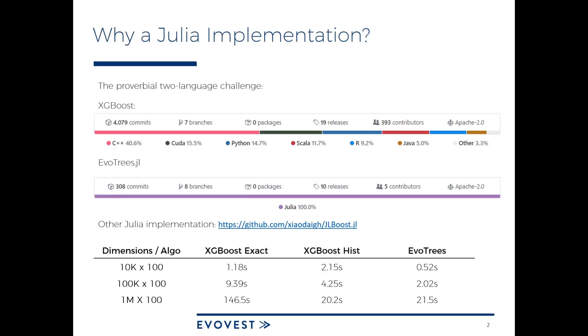Why doing a Julia implementation? There are already several major frameworks for gradient boosting trees like XGBoost, LightGBM, and CatBoost. They are all C++ libraries with wrappers for various languages. With EvoTrees, it's a 100% Julia implementation with a very lightweight code base.